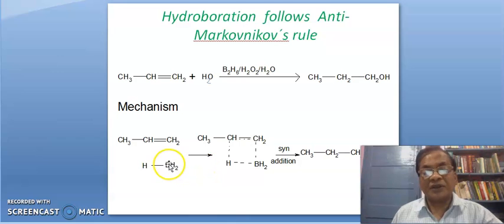Here, borane reacts with this propene leading to this transition state. This borane is electrophile and it attacks less hindered carbon. Friends, this carbon is more hindered. This carbon is sterically hindered because a bulky methyl group is here.